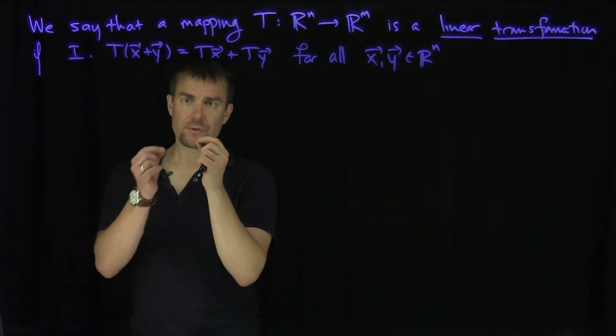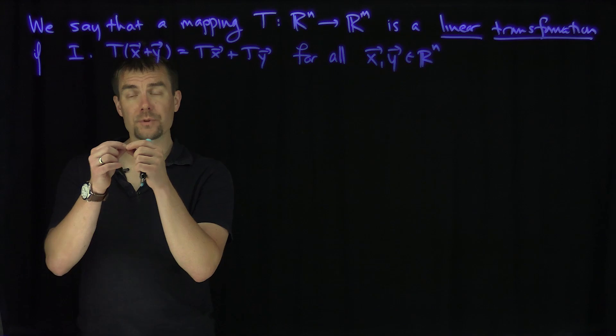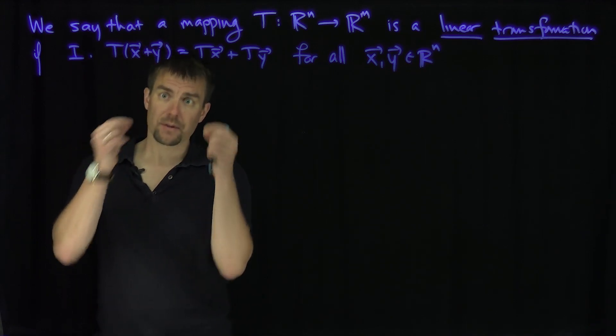In other words, if you add two vectors in R^n and then operate by this mapping, the mapping will just add those individual vectors themselves together at the end of the day.